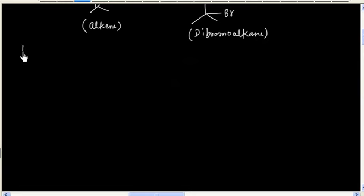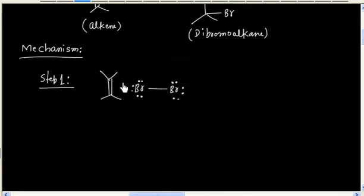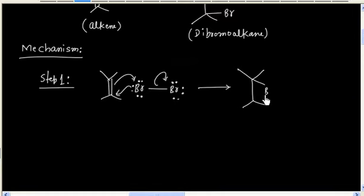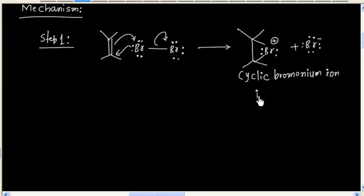Let us consider the mechanism of this reaction. In the first step, a cyclic bromonium ion is formed as an intermediate. This is the cyclic bromonium ion, and this is the intermediate of this reaction.